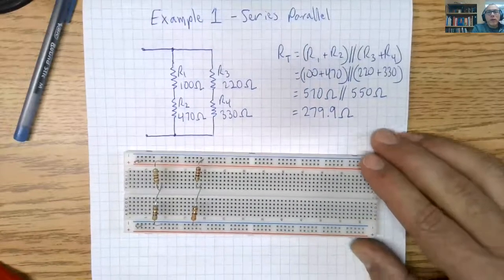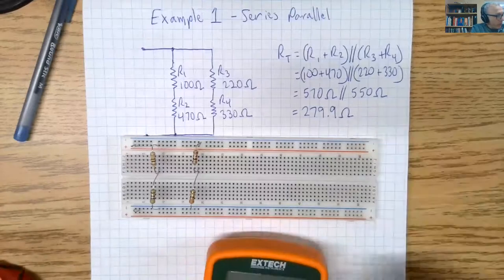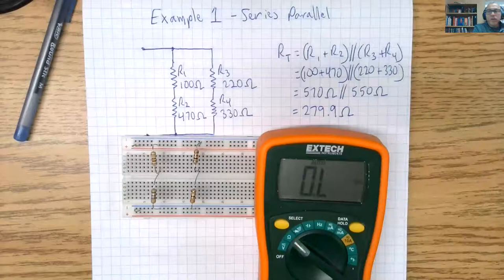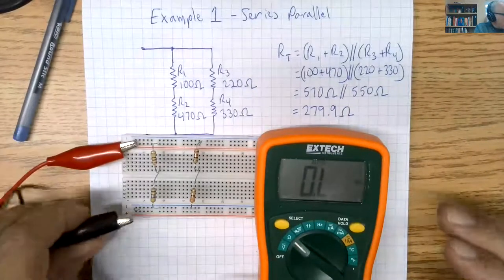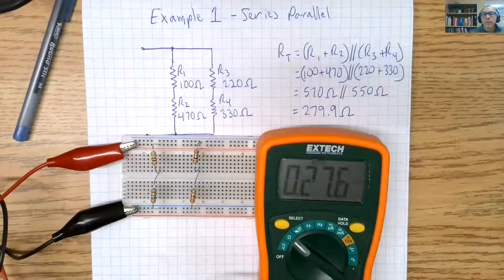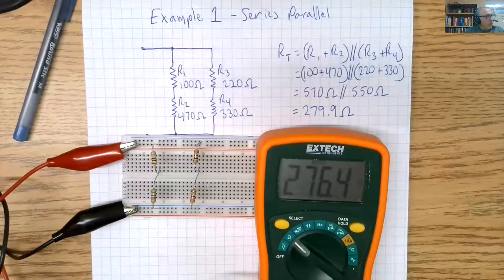So if I bring my meter into the circuit, we're going to measure RT and I come up with 276.5, so I am within the 5% tolerance of those four resistors.